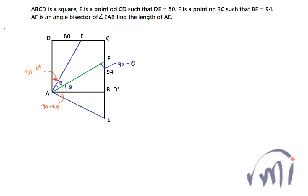So if this is 90 minus 2 theta, this is 90 degrees, so this angle will actually be equal to 2 theta. And angle DEA is actually equal to angle AE'D' or B' this will also be equal to 2 theta.